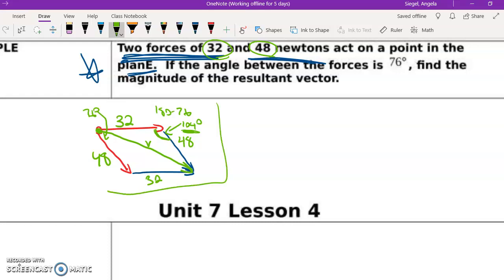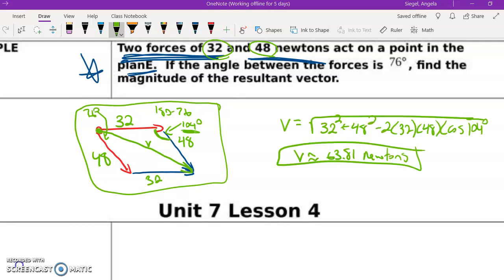So I'm going to go ahead and apply the law of cosines because that's what we're going to use here. Just remember, think back to that last lesson where we found the diagonals of parallelograms and that's what's going to help us out here. And you should get, once you apply the law of cosines, you should get about 63.81 Newtons.